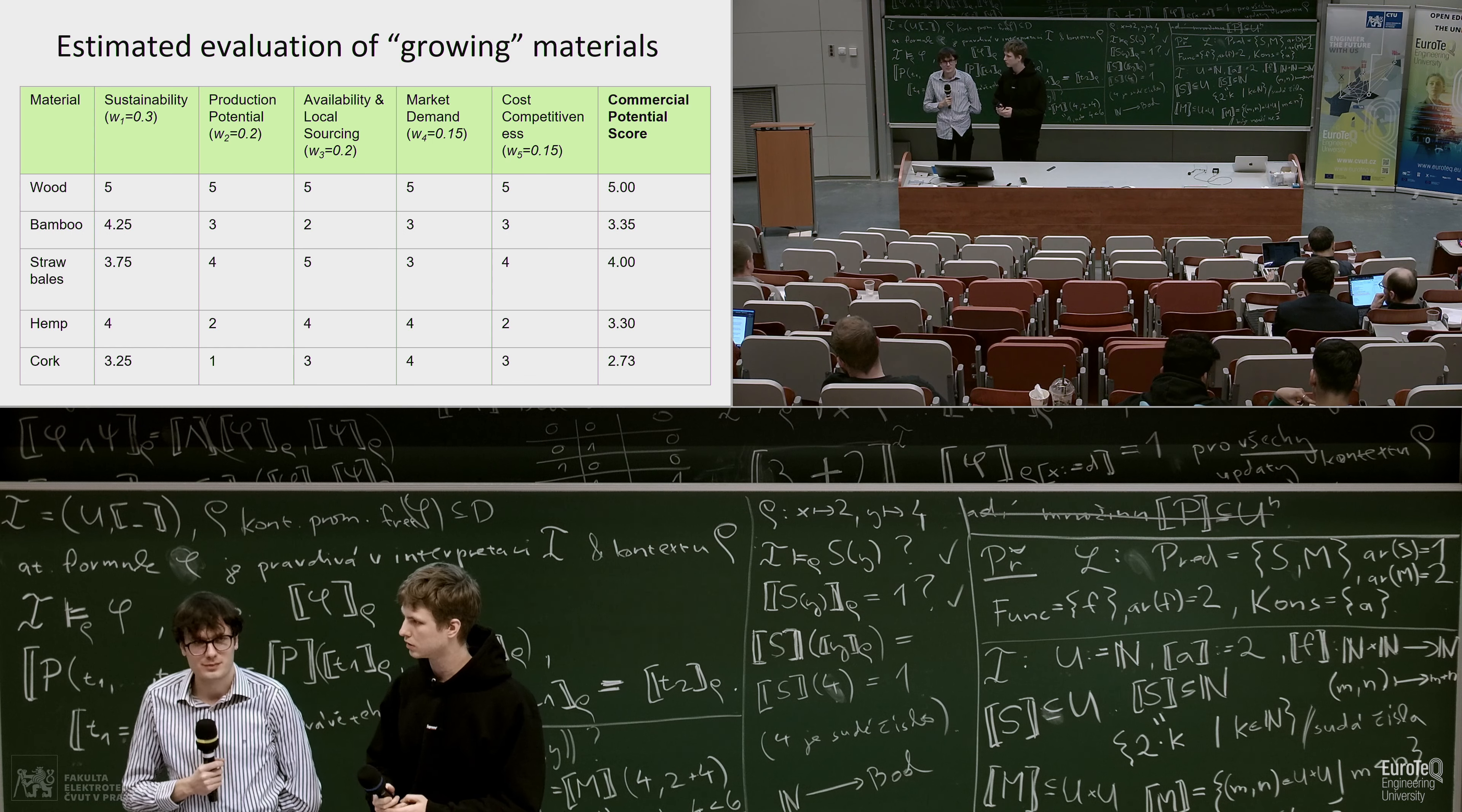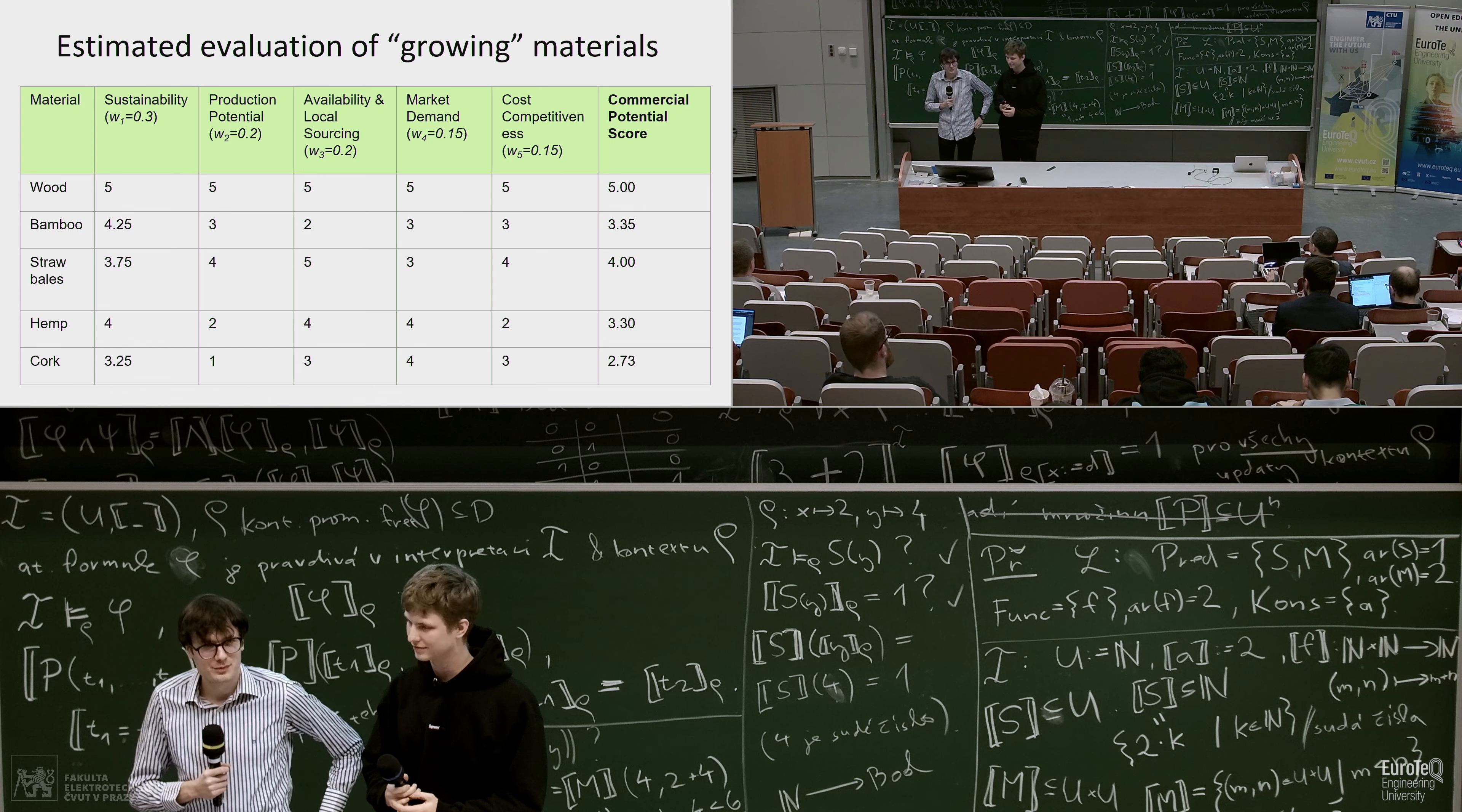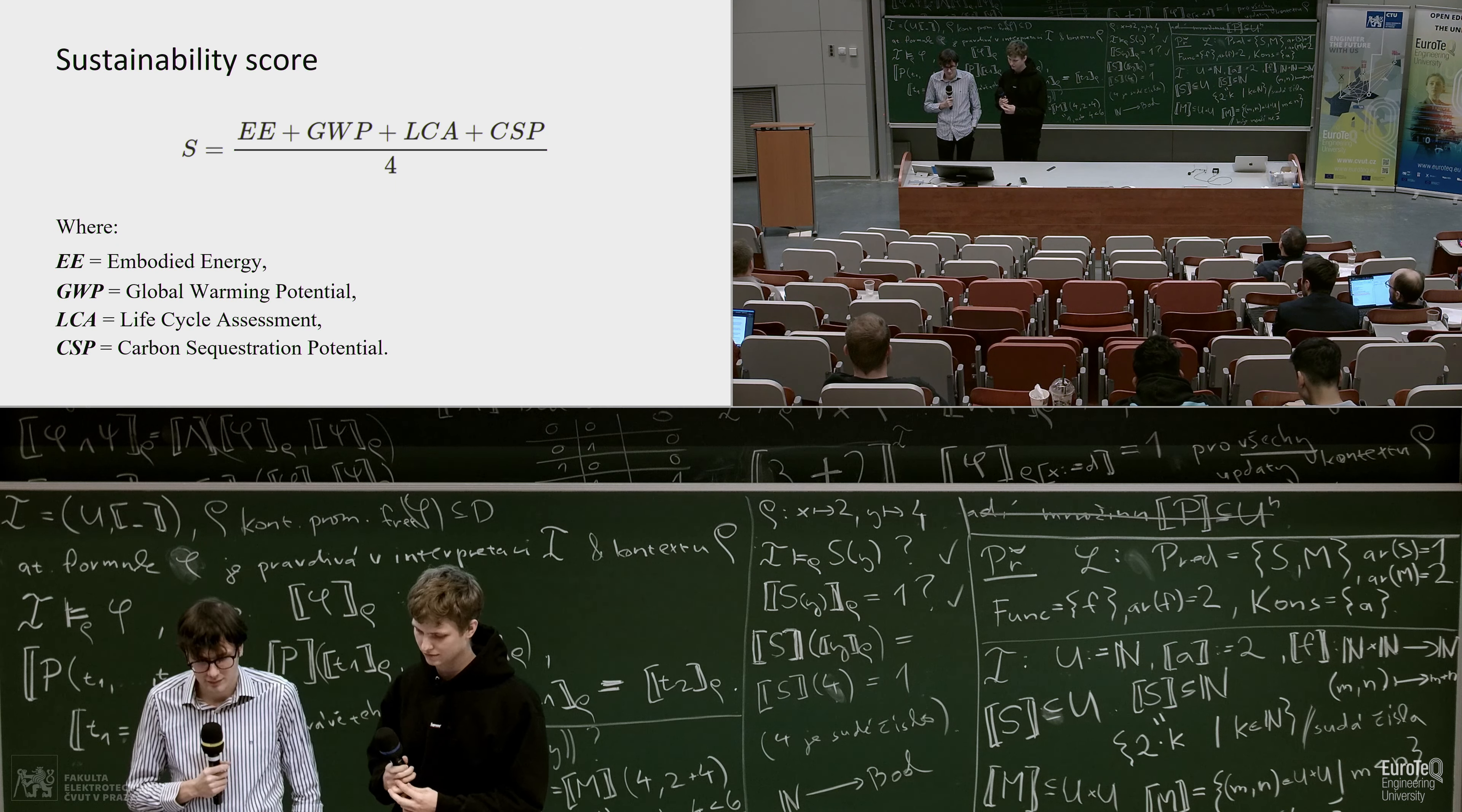Any other questions, remarks? Maybe some colleagues from civil engineering who can comment this work? I have a question. I am an architect, so I am really terrible with formulas. But when you showed your sustainability index, if you can show that, you present it as an average of four numbers. But these four numbers have different units. So how is it possible that you can actually make this formula like this, like an average of four things that have completely different units?